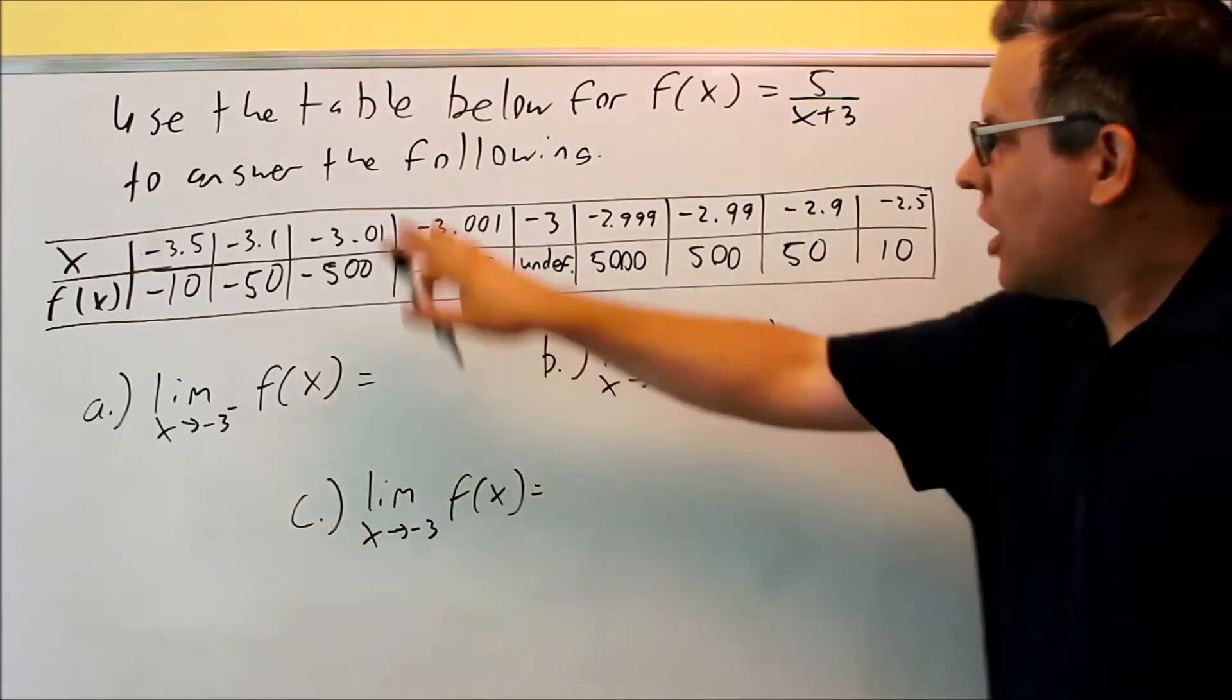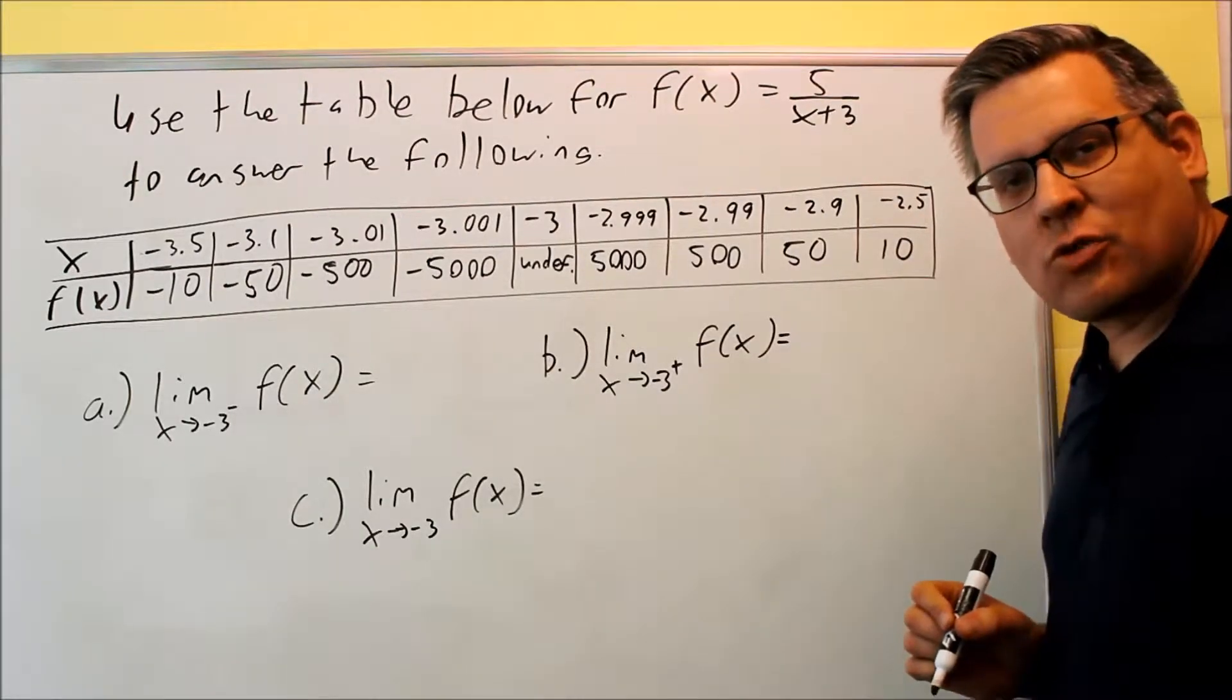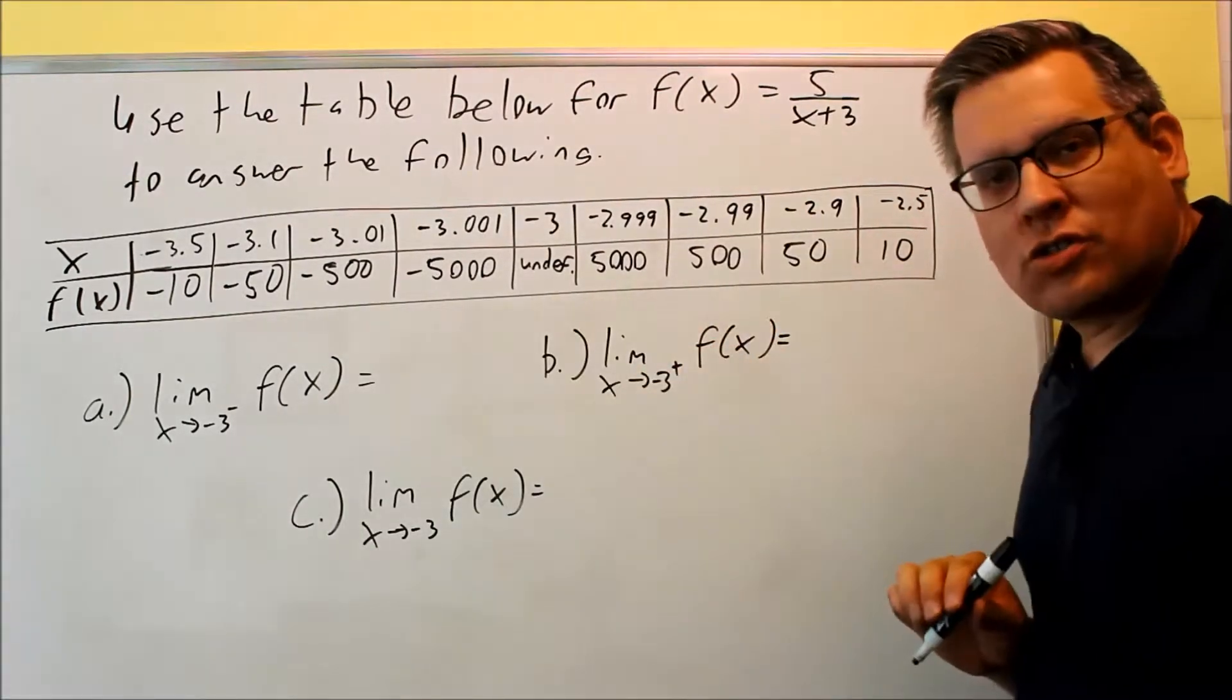For this problem, we're looking at a table that's been provided for this function f of x equals 5 over x plus 3, and we're going to use this in order to answer these questions.